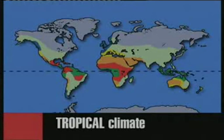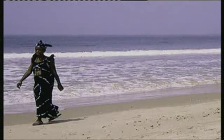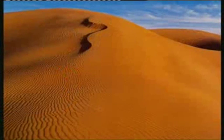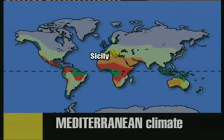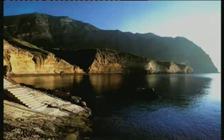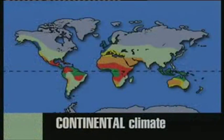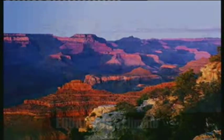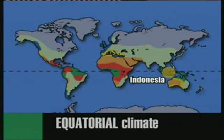Tropical climate, like in Western Africa. Desert climate, like in Arabia. Mediterranean climate, like in Sicily. Continental climate, like in the USA. Equatorial climate, like in Indonesia.